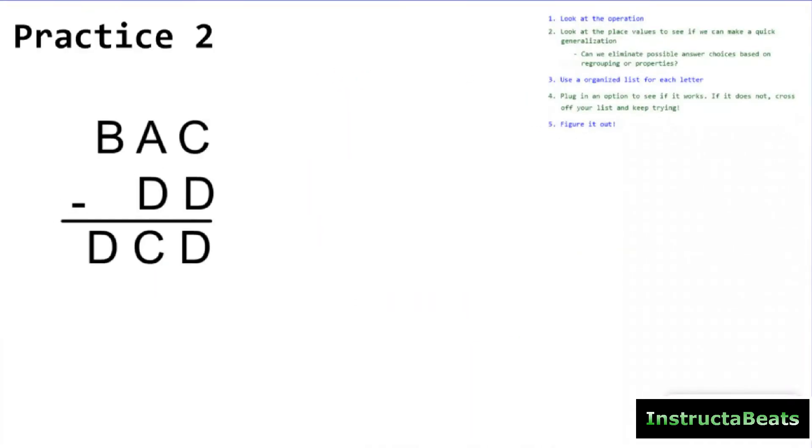Here's another example of a subtraction cryptorhythm puzzle. If you are ready to try this one by yourself, go ahead and push pause, try it out, follow our thought process. And if not, it's okay, you can do another one with me. So I'm going to go ahead. I see A, B, C, and D. So I'm going to come over here. I'm going to write A equals, B equals, C equals, and D equals.